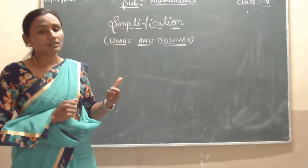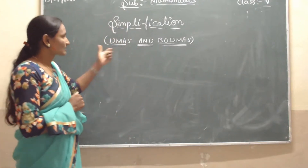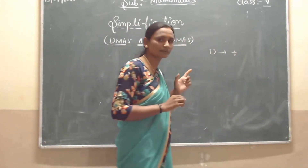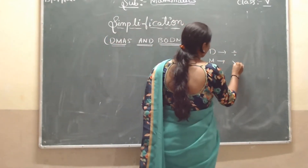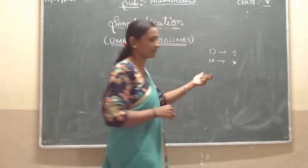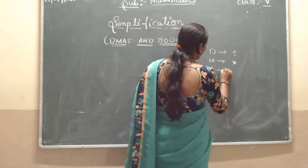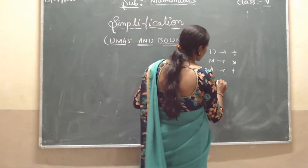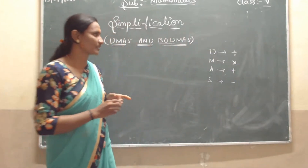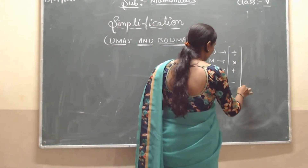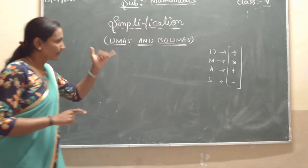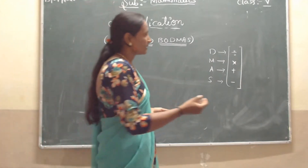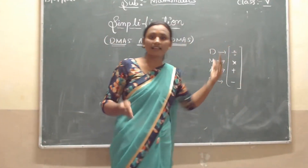These all symbols you learned in previous classes. Now I will explain. The symbol of division — D for Division. M means Multiplication, and the sign for multiplication. A means Addition. S for Subtraction. These all are already learned in previous classes — division, multiplication, addition, and subtraction — the foundation of mathematics. You will use these signs from previous classes and follow the exercises.